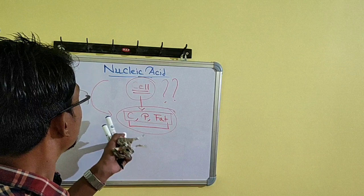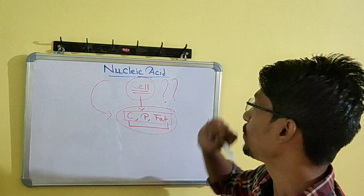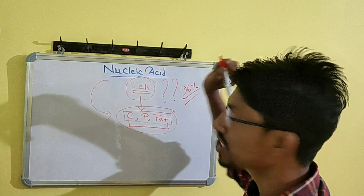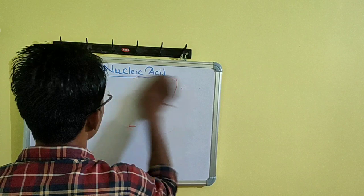Without nucleic acid, the formation of life is impossible. We will now study the structure of nucleic acid, because this is the main molecule that defines any species. For example, we humans and chimpanzees have almost 96% similar genetic makeup, but why we are different — that answer lies within the structure of nucleic acid.